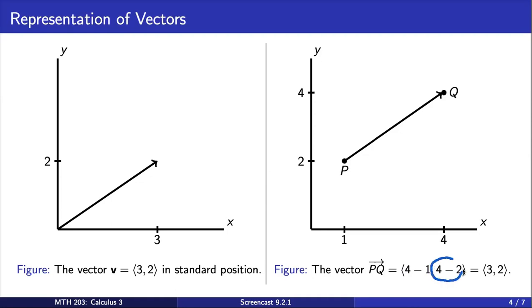Similarly, to get the y component, we take the y coordinate of q minus the y coordinate of p. Be careful though, as the order that you take the difference determines the direction of your vector.